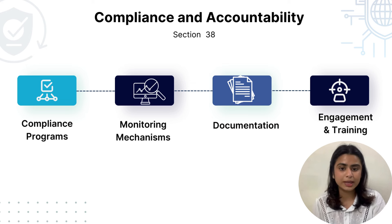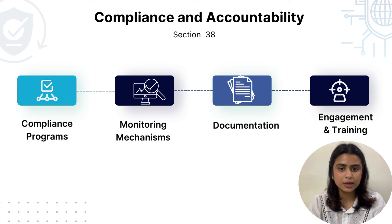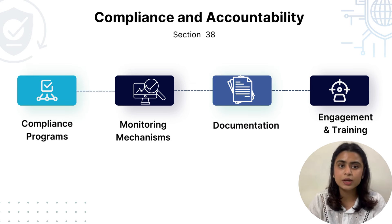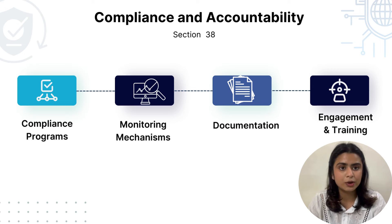Second, monitoring mechanisms. We have to establish mechanisms to monitor ongoing compliance with the DPDP Act. For example, Microsoft and Google use automated monitoring systems to continuously assess compliance with data protection laws, enabling proactive issue resolution. Continuous monitoring allows the organization to address compliance issues before they escalate, ensuring they are adhering to the DPDP Act.